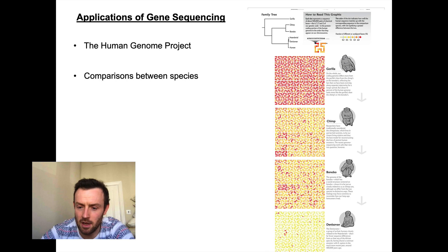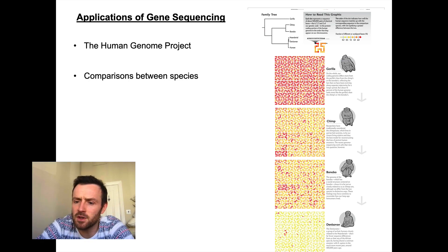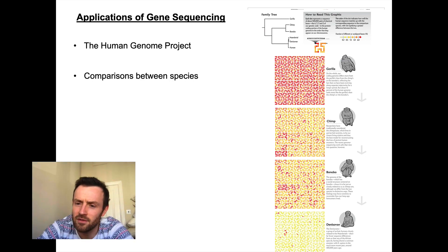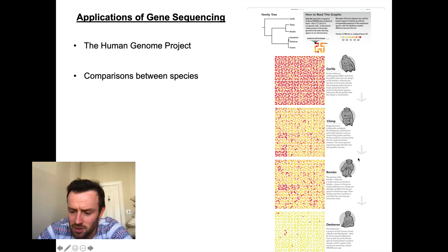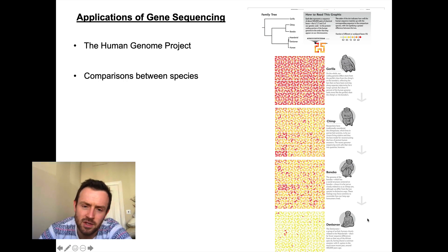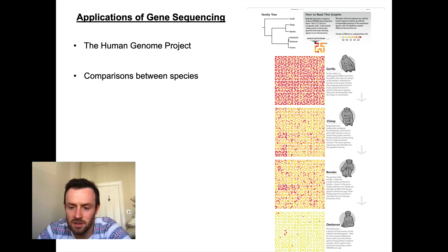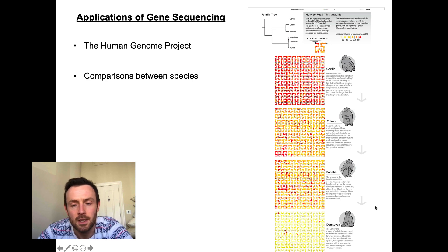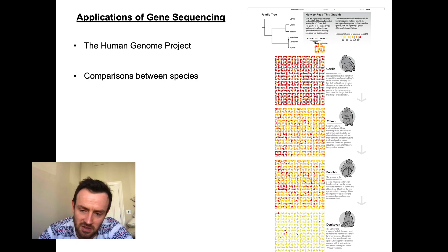Comparing species using gene sequencing is a really interesting application. You can sequence the human, gorilla, chimp, and bonobo genomes, and also partial genomes of fossils. For example, the Denisovans are a group of archaic humans closely related to us but slightly different. By sequencing ourselves, these primates, and this ancestor, we can see how closely related the Denisovans and other primates are to us.